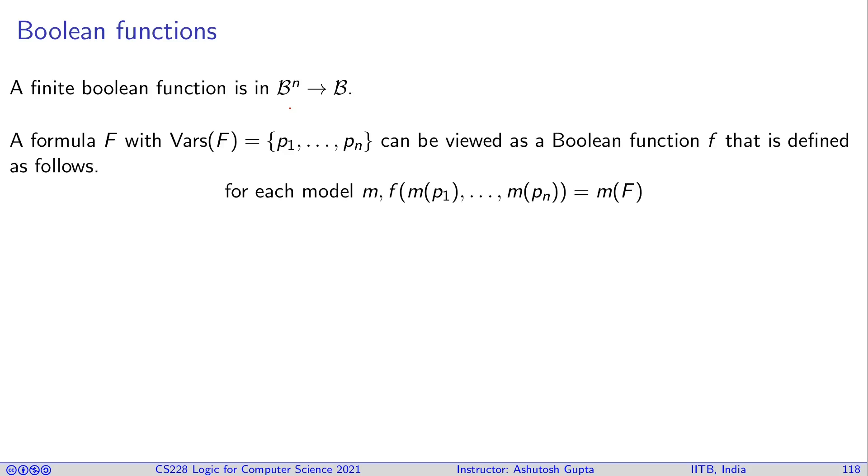Suppose your formula is F and it has variables p1 to pn. We can say it represents the function f as follows: You take a function f, give it an input which are model m of p1 and m of pn, and assign it the value m(F). If such a function can always be constructed, then this formula F represents function f.